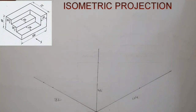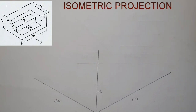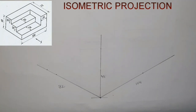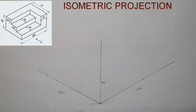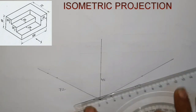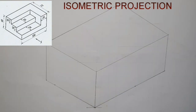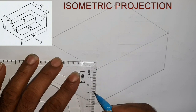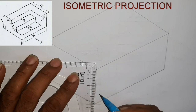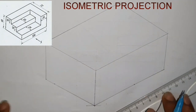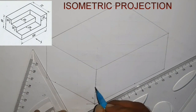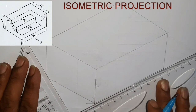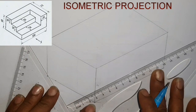When we draw our dimensions, we can draw the 3 dimensions into a box. We will draw the object from the box.